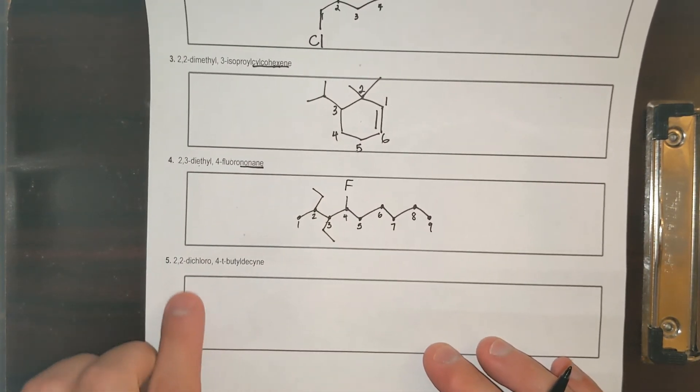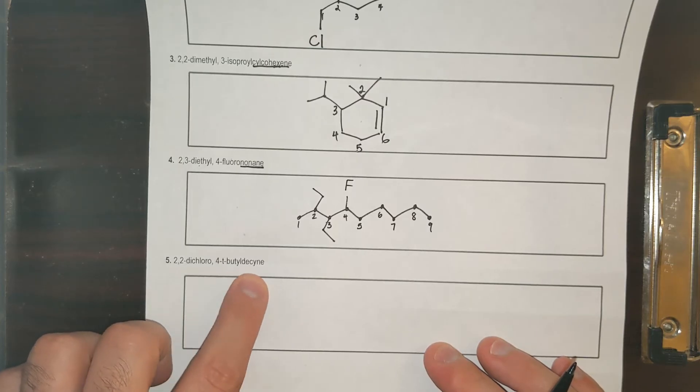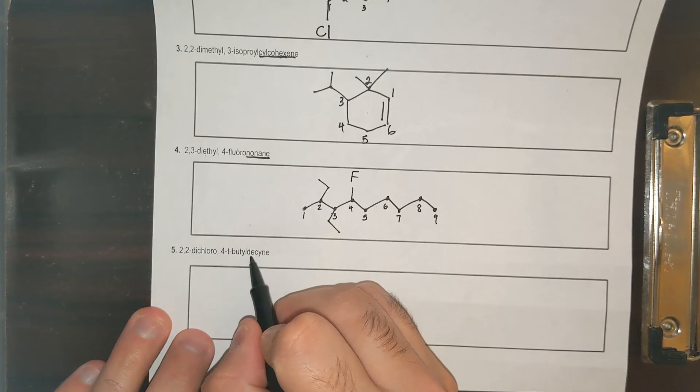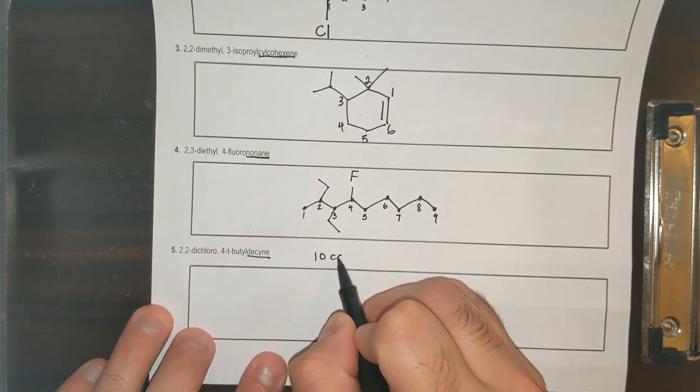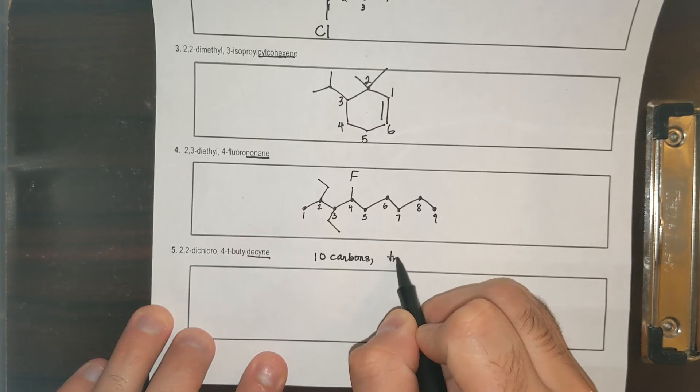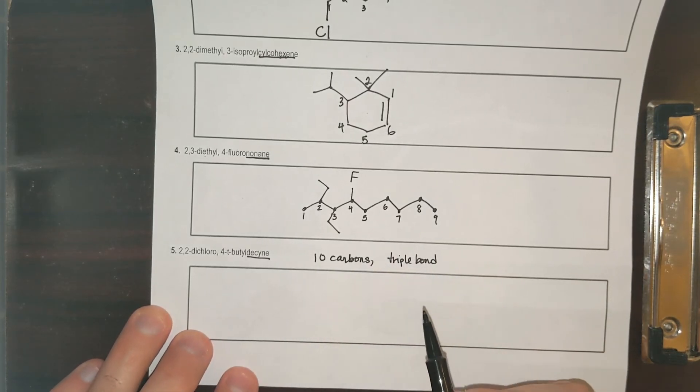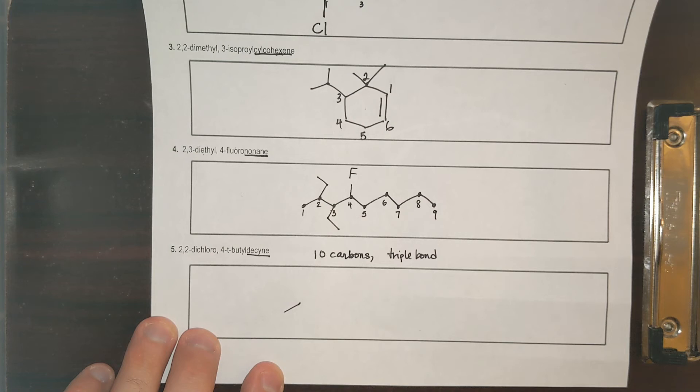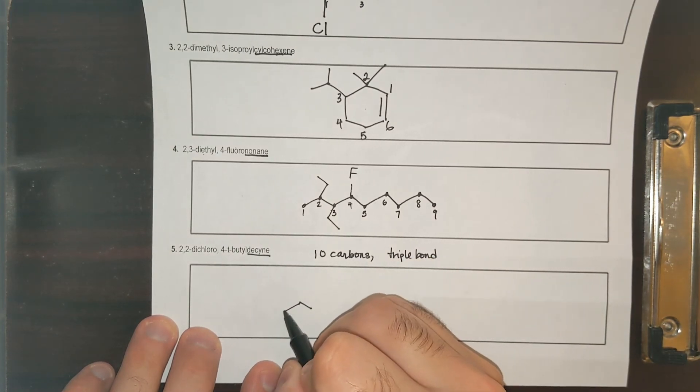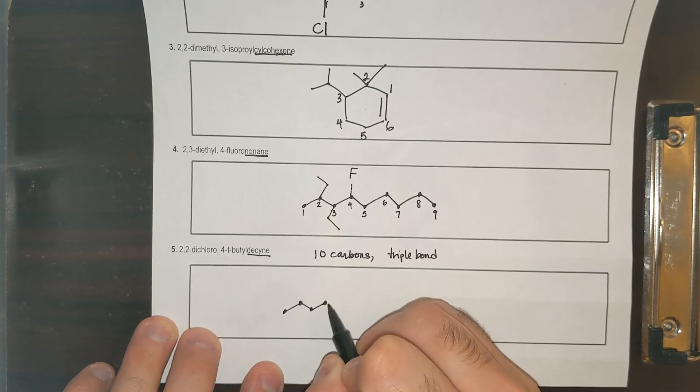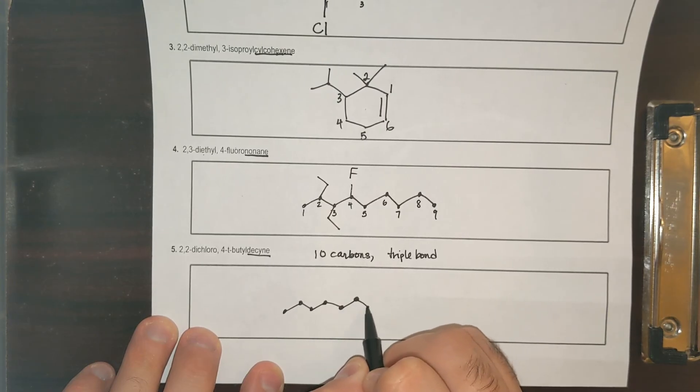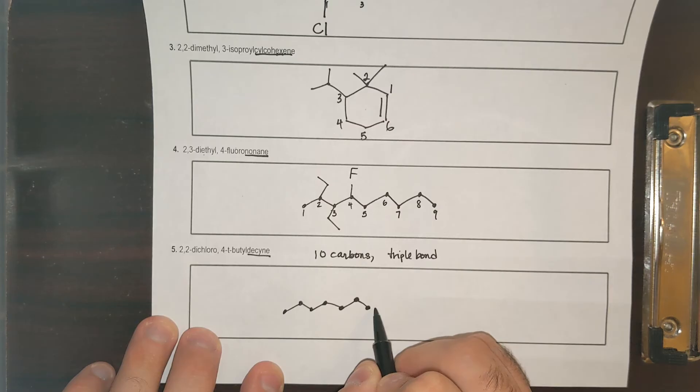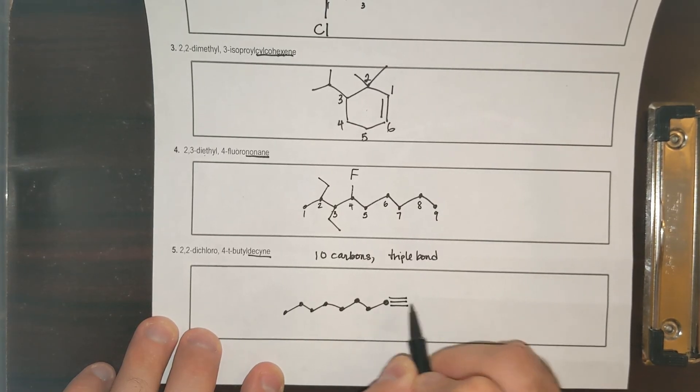Now let's do the last one. 2,2-dichloro-4-t-butyl decaine. Decaine means 10 carbons and there's a triple bond somewhere. Later on I'm going to specify where the triple bond goes, but I didn't put it anywhere. So I'll put it somewhere in the middle, doesn't matter. One, two, three, four, five, six, seven, eight. And then I'll make the triple bond here. Nine and then ten.